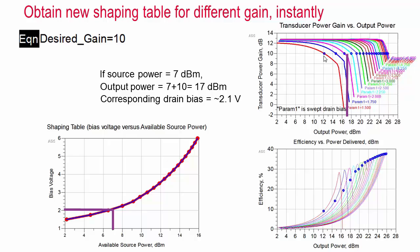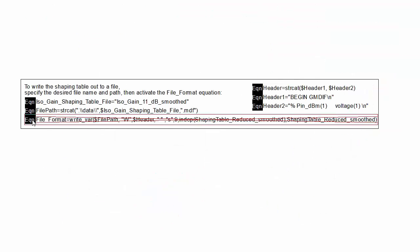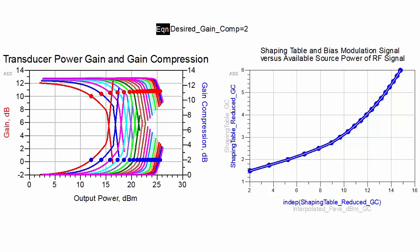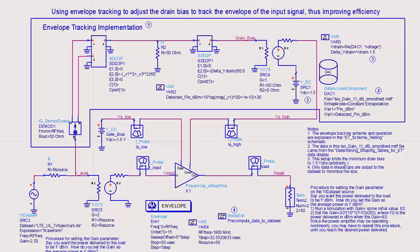You can write out the shaping table data into a file for subsequent simulations by just activating an equation. An alternative shaping table that keeps the power amplifier operating at a constant level of gain compression can be obtained from the same simulation. Once you have a shaping table, you are ready to run an envelope tracking simulation.